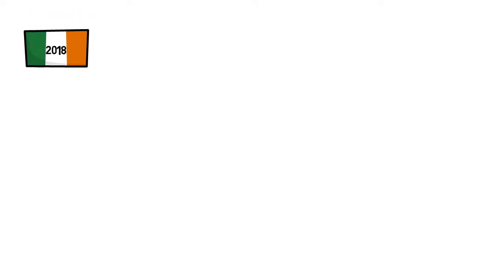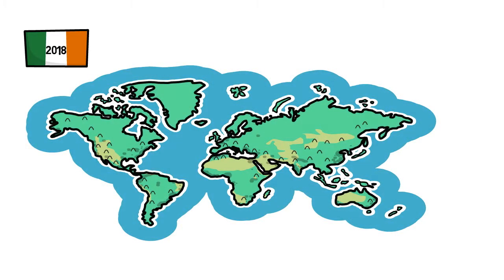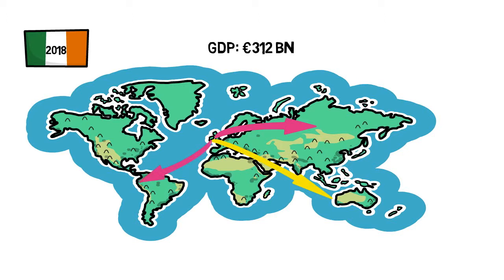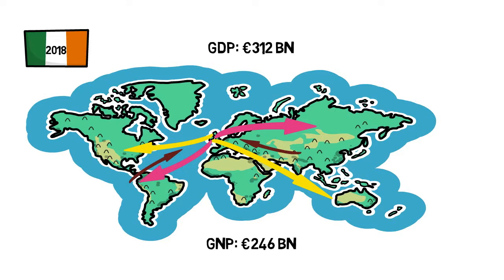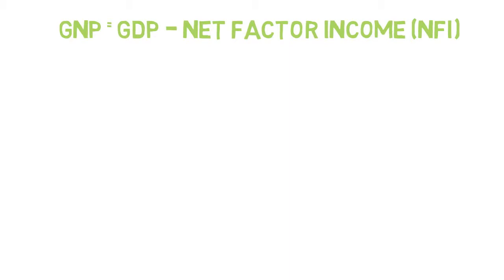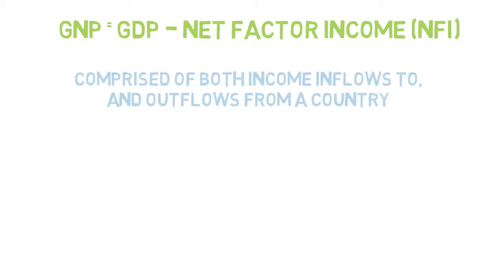Looking more closely at 2018 in Ireland to see where this net factor income is going — it's heavily influenced by the activities of foreign-owned multinational corporations in Ireland. Companies set up here tend to send profits back home; we call this the repatriation of profits. So if we have 312 billion in GDP in 2018, we subtract this 66 billion in net factor income to get GNP of 246 billion. The formula is: GNP = GDP minus net factor income — minus in Ireland's case because it's taken away, though in some countries it would be added.